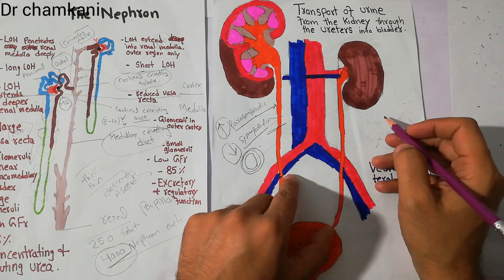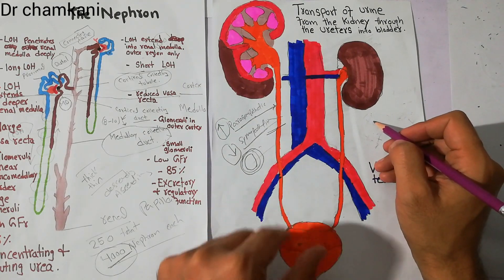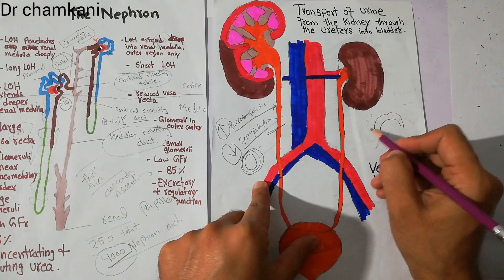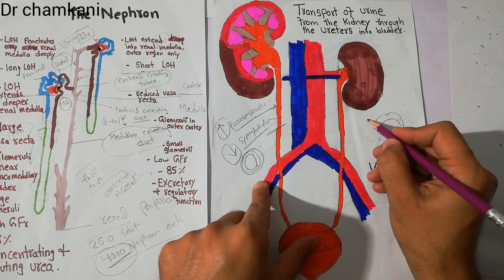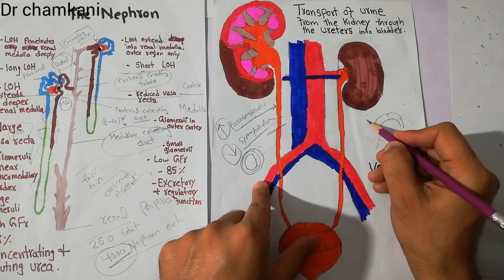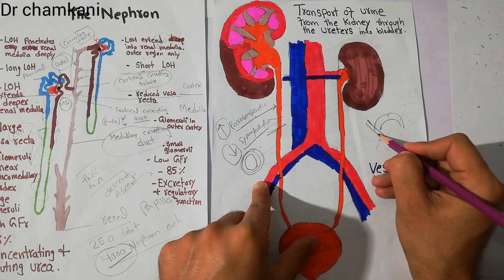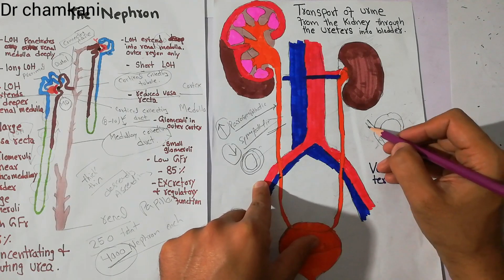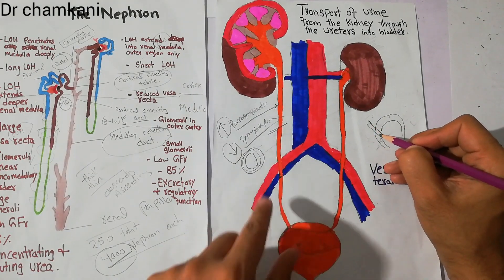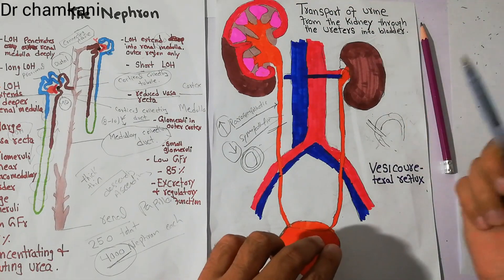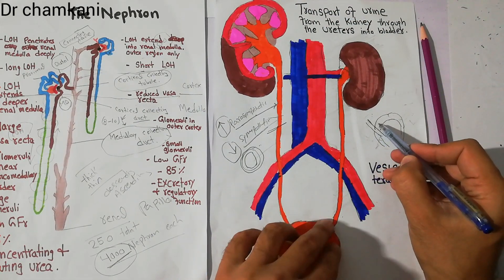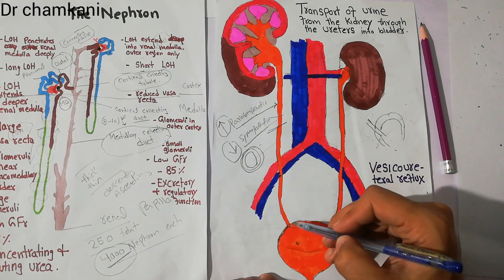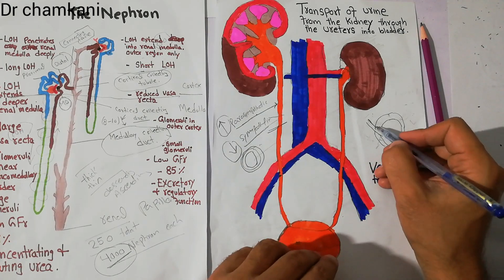In our last lecture, we discussed that this is the bladder wall. The ureter basically moves a few centimetres inside the wall of the urinary bladder, and it is moving obliquely.